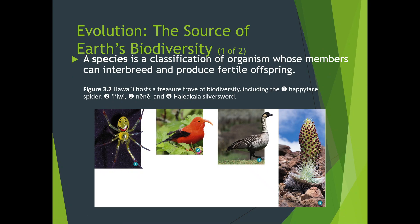A species is defined as a classification of organisms whose members can interbreed and produce fertile offspring — very important. If you cannot produce fertile offspring, you're not a species. For example, the mule is a combination of a horse and a donkey. Someone reasoned that a horse is gentle and a donkey is strong, so why not breed them? And we got the mule. But the problem is that mules cannot produce fertile offspring, so they're not considered a species.